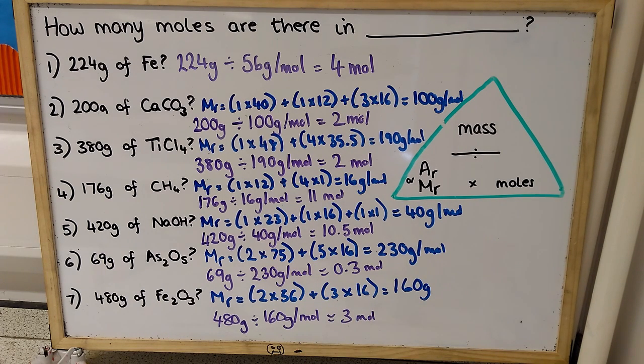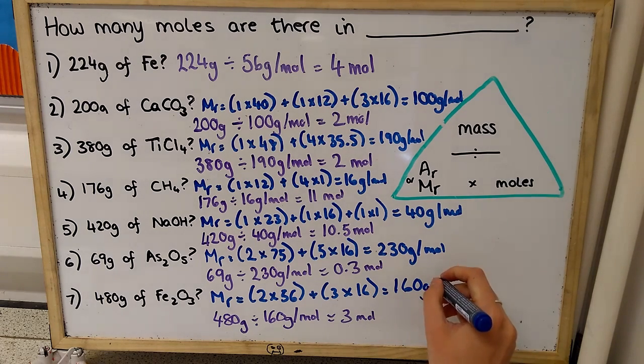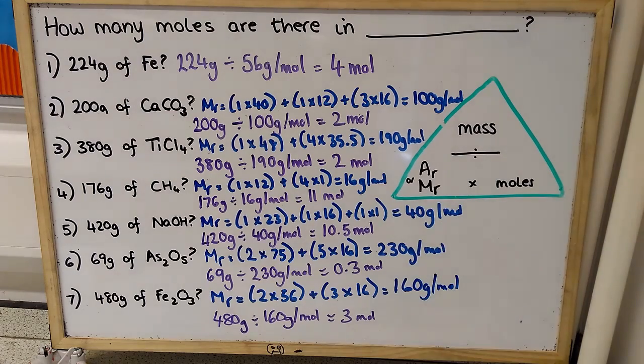And finally, with iron oxide, we've got a relative formula mass of 160 grams per mole. And so 480 grams is 3 moles of that.